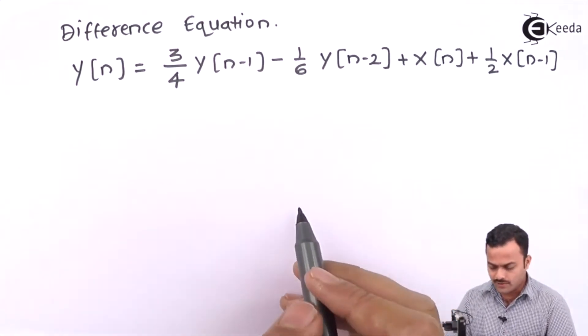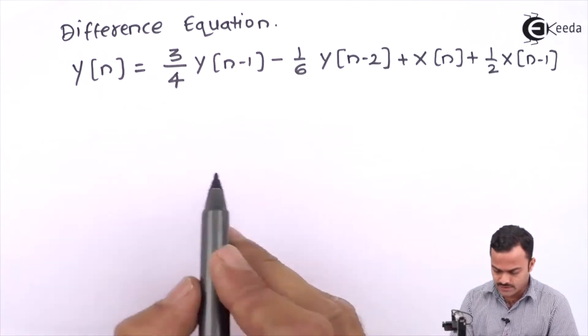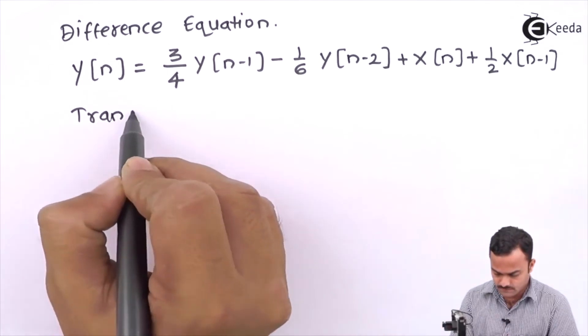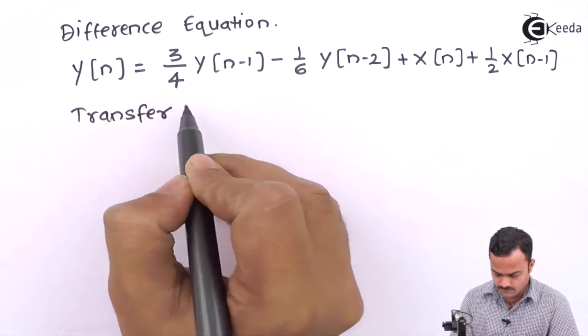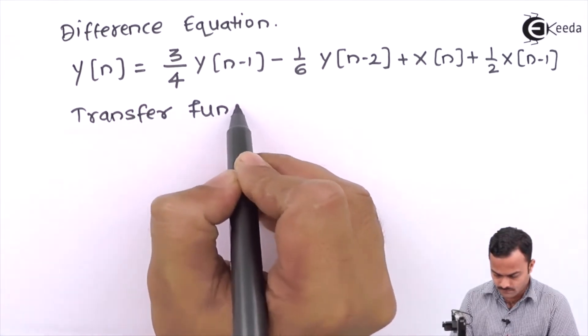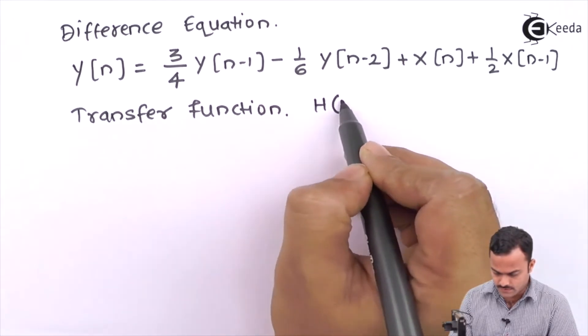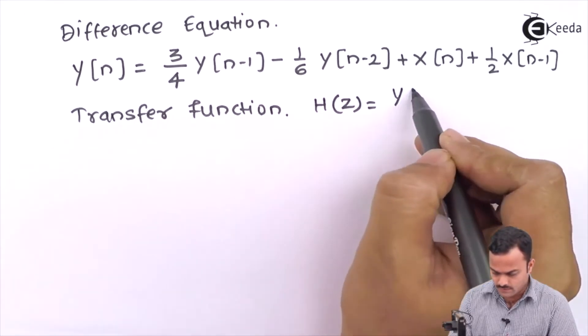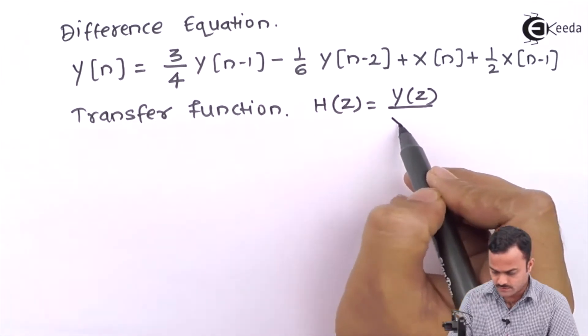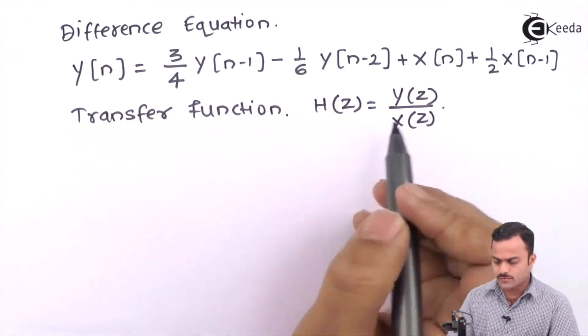They have not given any initial conditions. We have to get a transfer function, which is H(z). It's nothing but Y(z) upon X(z), so we are assuming zero initial conditions.